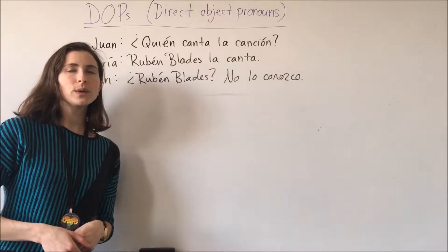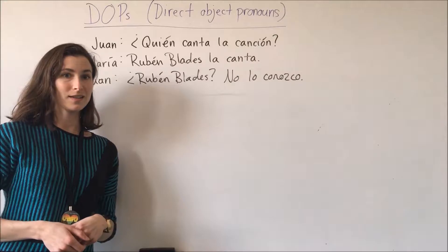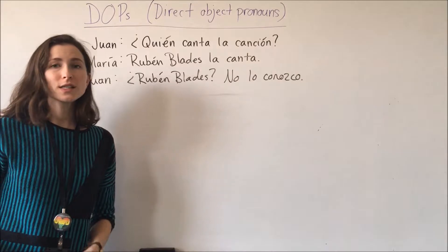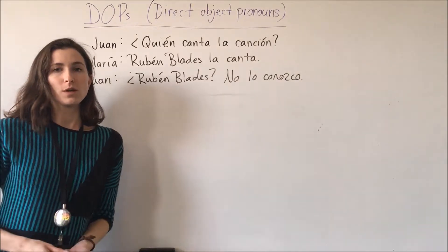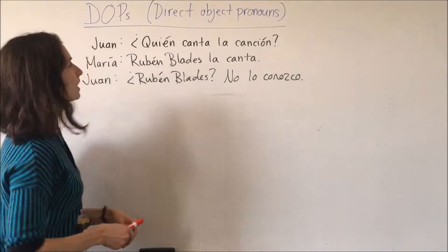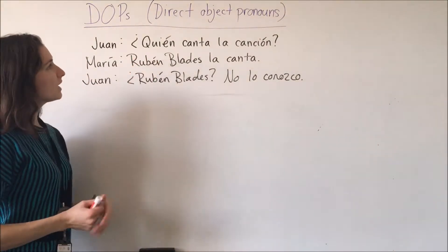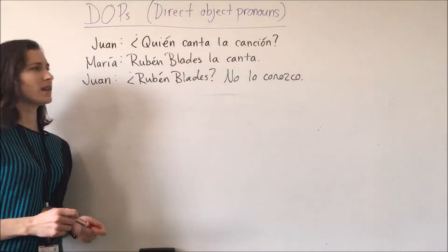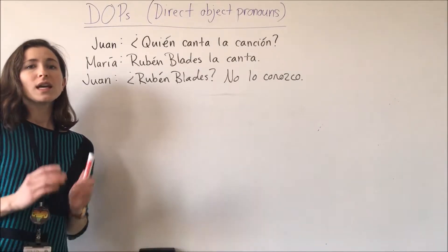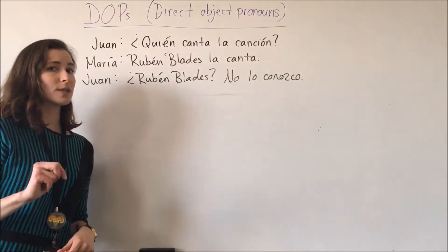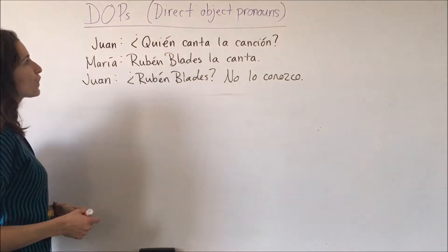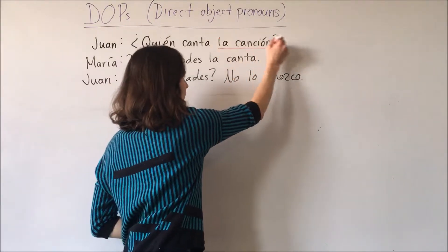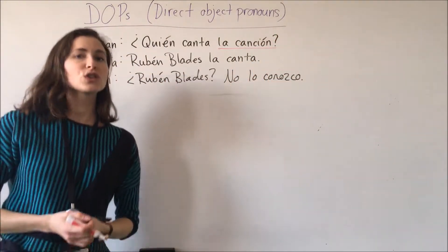So how do we determine our direct objects and figure out the correct direct object pronoun in Spanish? We ask ourselves the same question: what is verbed? What is directly affected by the verb? Here we have a very short dialogue. ¿Quién canta la canción? Rubén Blades la canta. Rubén Blades no lo conozco. Here we have two direct objects and two direct object pronouns. First, canta — what is sung? La canción. That's our first direct object.